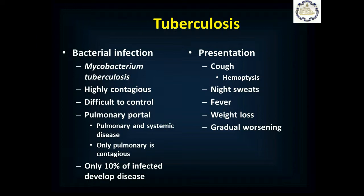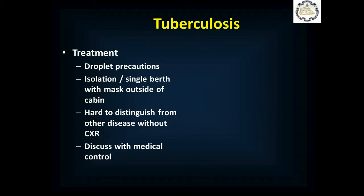Tuberculosis is a bacterial infection with Mycobacterium tuberculosis. It is highly contagious and very difficult to control. It enters through the lungs and can cause lung disease or spread throughout the body; only the pulmonary form is contagious. Only 10% of infected people actually develop active tuberculosis. Presentation: cough — typically with hemoptysis (coughing up blood) — along with night sweats, fever, weight loss, and gradual worsening. No one with active tuberculosis should be allowed on the ship, as it can spread to the crew. If someone develops symptoms, place them on droplet precautions in a single berth; if they leave the cabin, they must wear a mask. Distinguishing TB from other causes of chronic cough requires a chest X-ray, so discuss management with medical control.